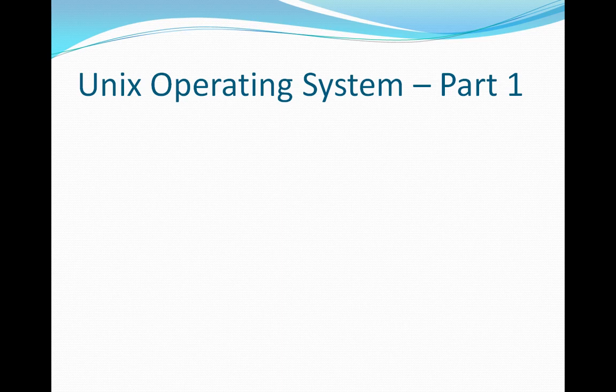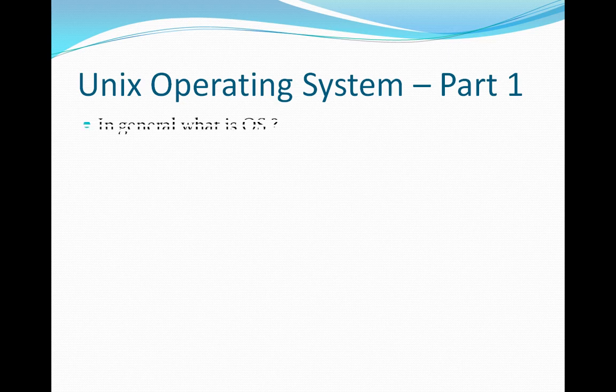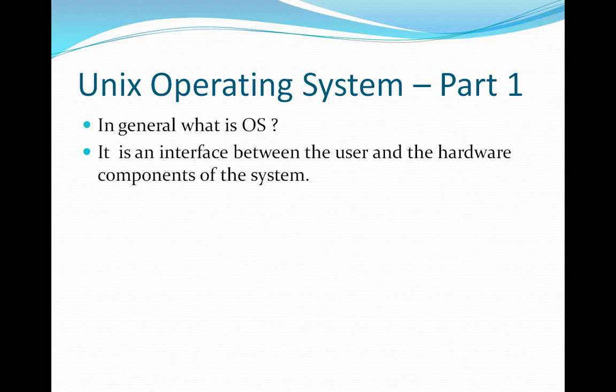What are the different operating systems we have in the present world? We have Windows, Mac, Android, BlackBerry, and different mobile operating systems. In the same way, UNIX is also an operating system.